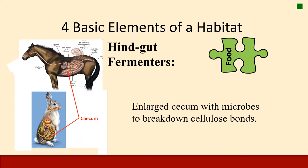The last type of animal is hindgut fermenters, such as horses or rabbits. In hindgut fermenters, an enlarged cecum houses microbes — bacteria and protozoa, similar to ruminants — that break down cellulose. One major difference from ruminants is that the cecum is located after the absorptive areas of the intestines. So although it breaks down cellulose and provides some energy, there is a loss in proteins from the bacteria and protozoa because they are after the absorptive area, meaning hindgut fermenters require a little bit more food.